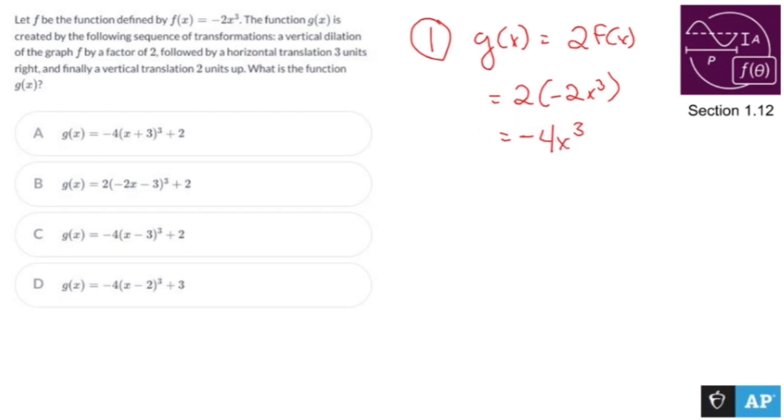Step two has us taking a horizontal translation three units right. When you go three units to the right, you open up the parentheses for everything attached to x. When you deal with horizontal translations, it's backwards land. So three to the right is not plus three; three to the right is minus three. So (x - 3)³.